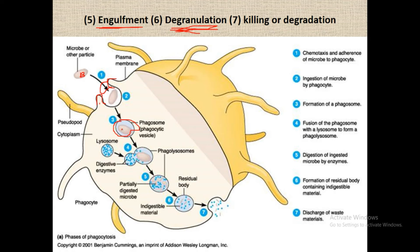The sixth step is degranulation. Inside the phagocyte cell there are lysosomes containing different types of digestive enzymes. These lysosomes bind to the bacteria-containing pouches and release their digestive enzymes inside the pouch. This stage is known as degranulation.